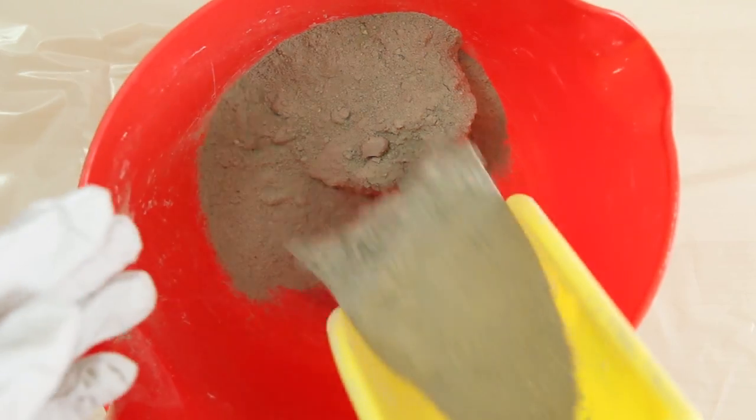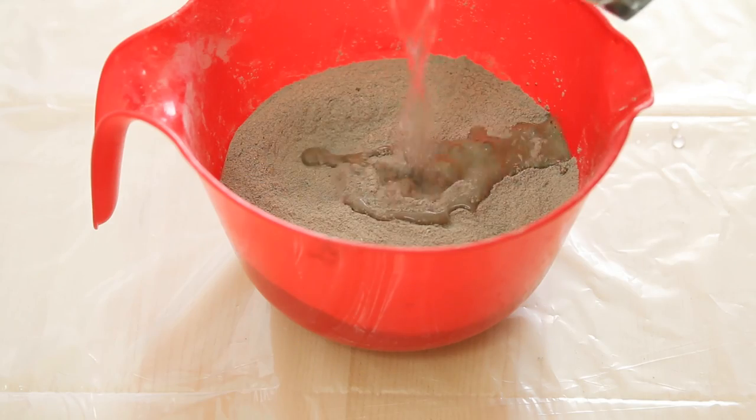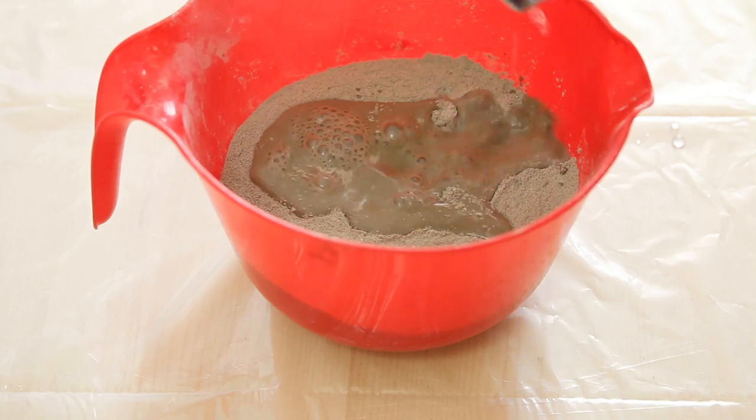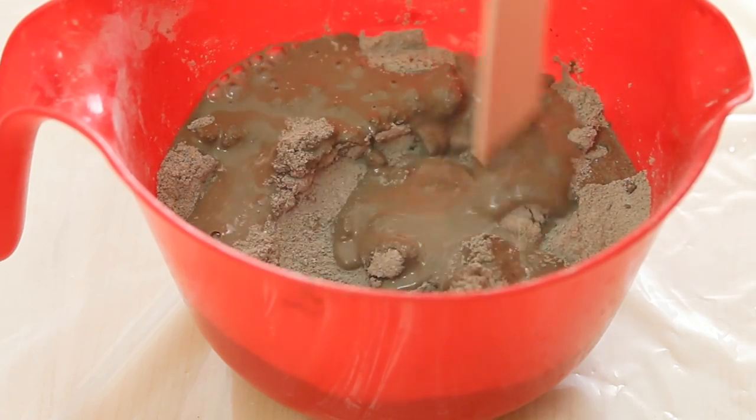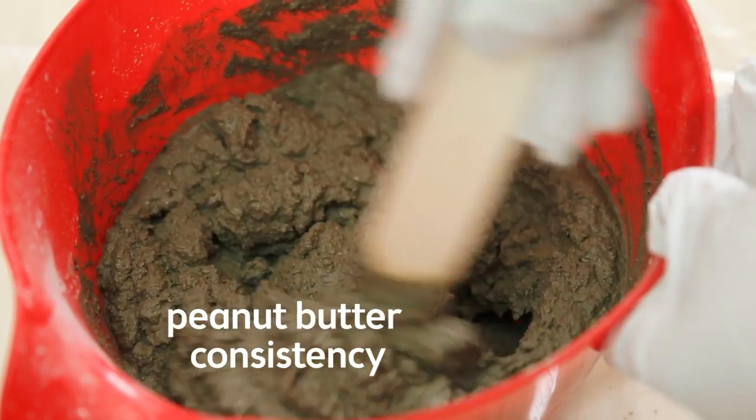Now to mix the cement. Pour your cement into a large bowl and just add water as much as you need. There really is no perfect measurement. It's just you want to keep stirring in water and cement until you achieve a peanut butter consistency.